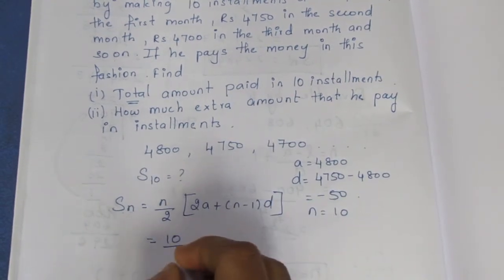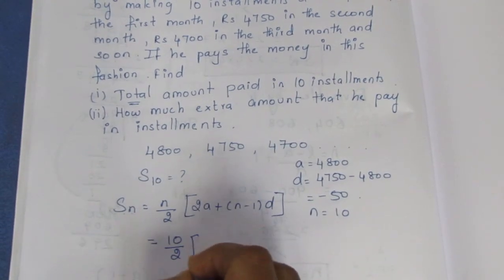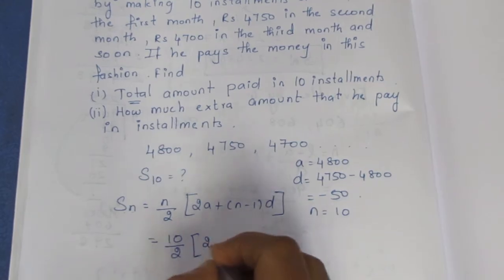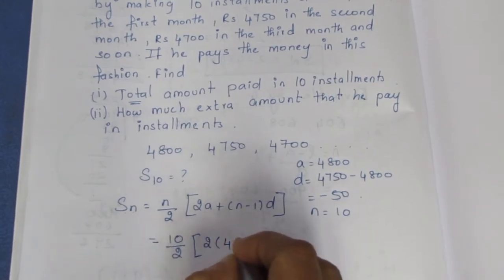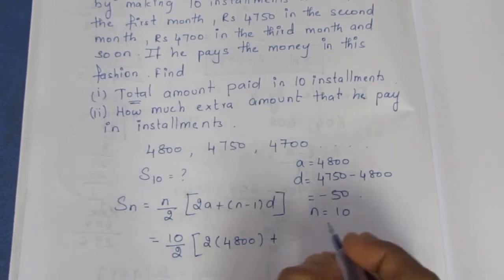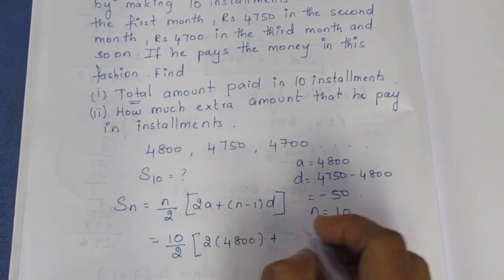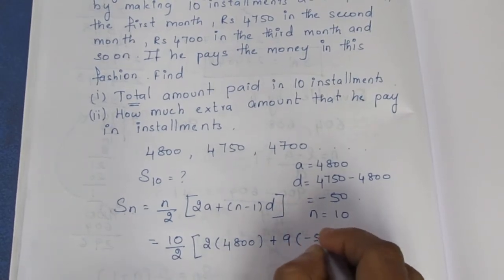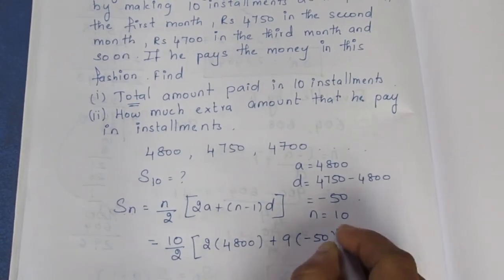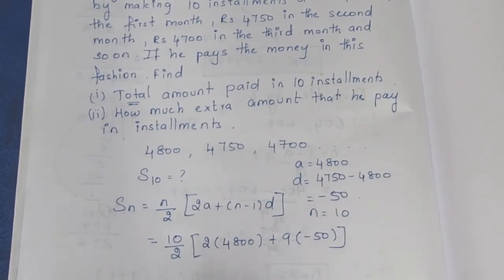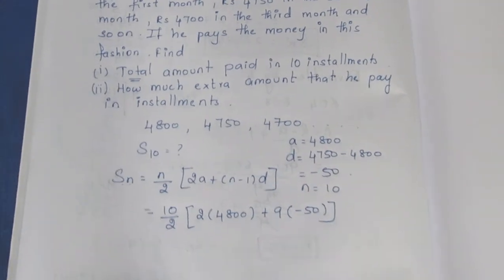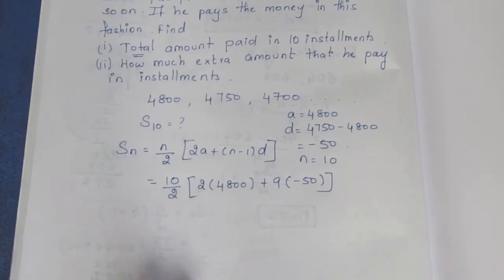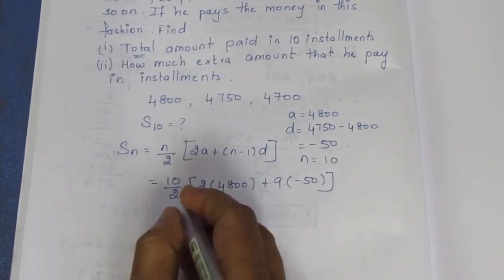Substituting: S10 equals 10 by 2, into 2 into 4800, plus n minus 1 which is 10 minus 1 equals 9, into d which is minus 50.